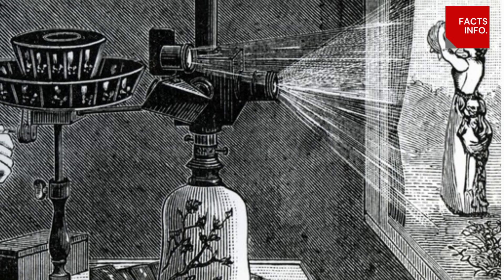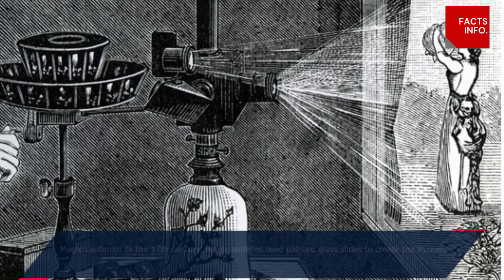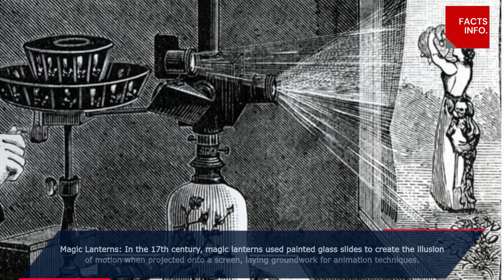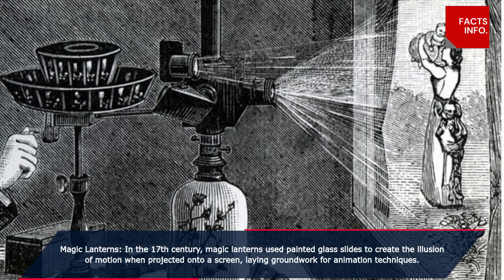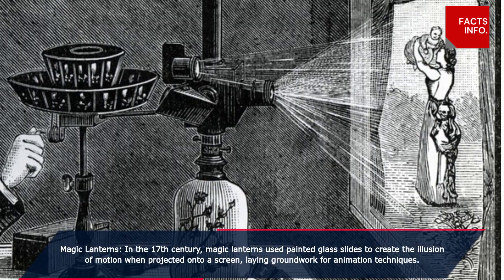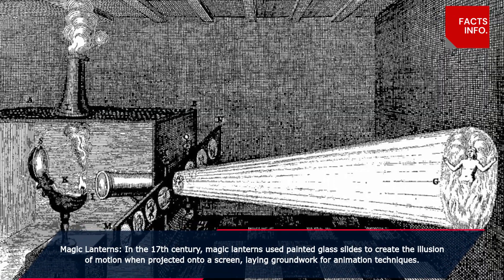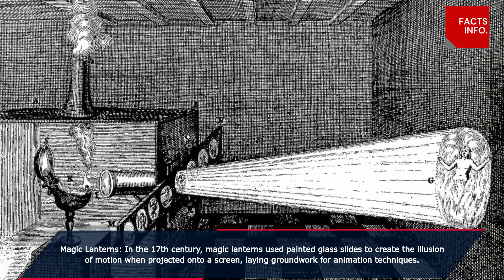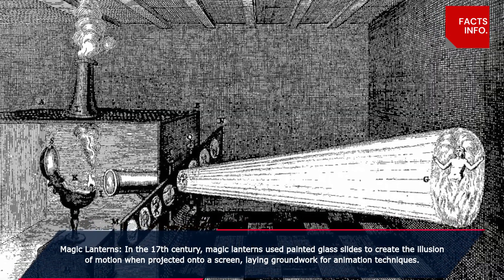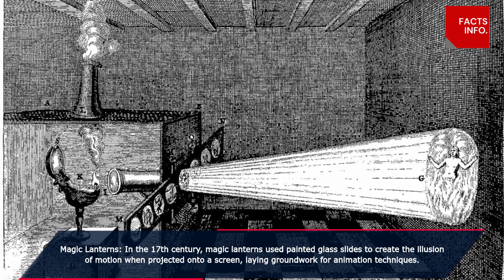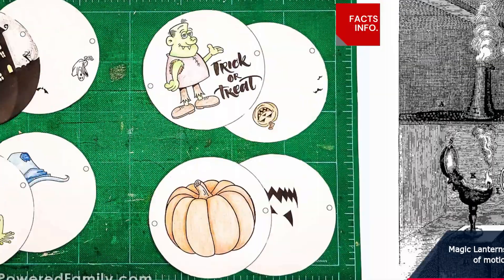Magic lanterns. In the 17th century, magic lanterns used painted glass slides to create the illusion of motion when projected onto a screen, laying the groundwork for animation techniques.